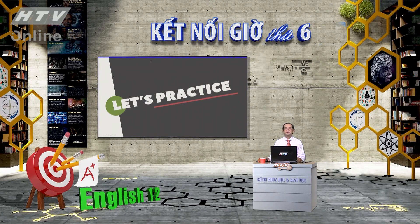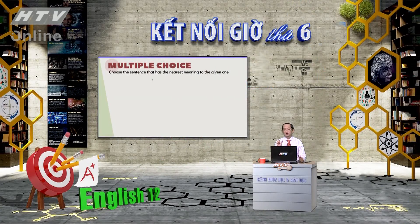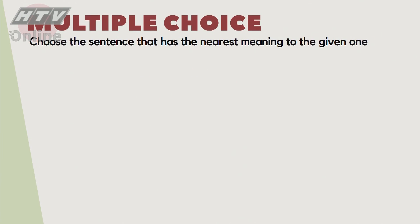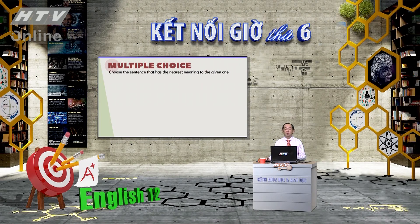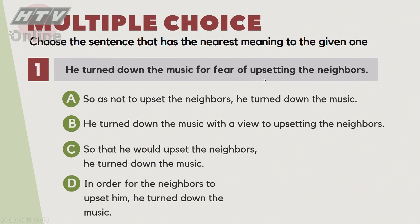Chúng ta luyện tập với dạng Sentence Transformation Multiple Choice - chọn câu gần nghĩa nhất với câu đề ra. Đây là dạng bài cũng xuất hiện trong đề thi THPT Quốc gia. Câu số 1: Để hàng xóm đừng bị phiền, anh tắt nhạc đi / bật nhạc nhỏ lại. Đáp án chúng ta là chữ A.